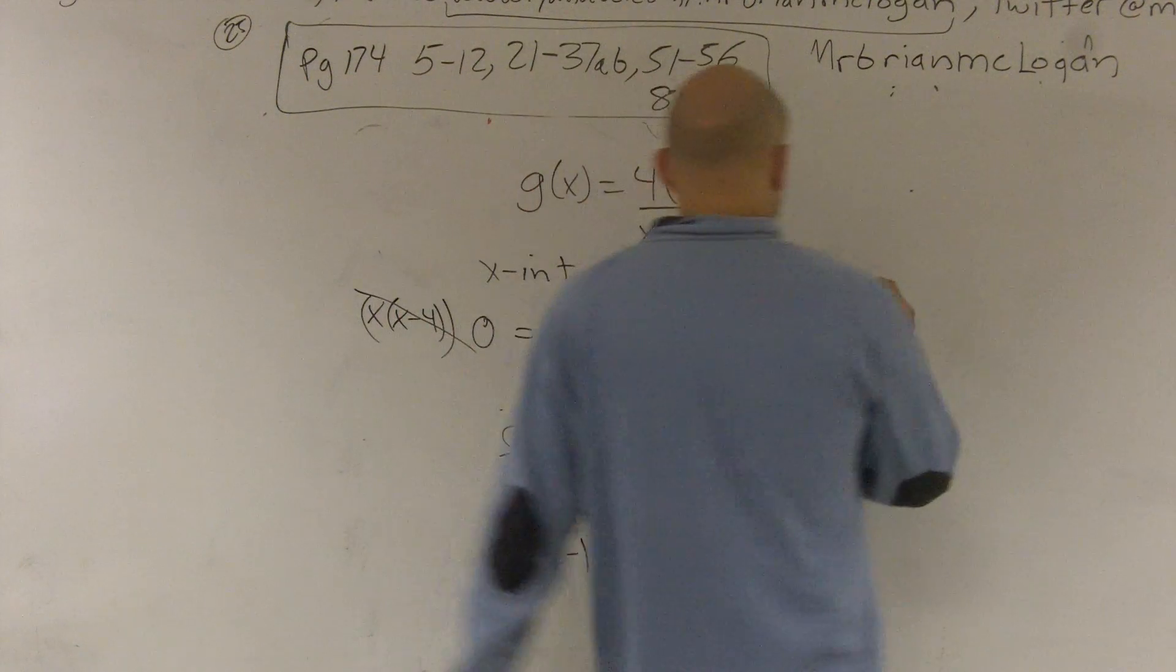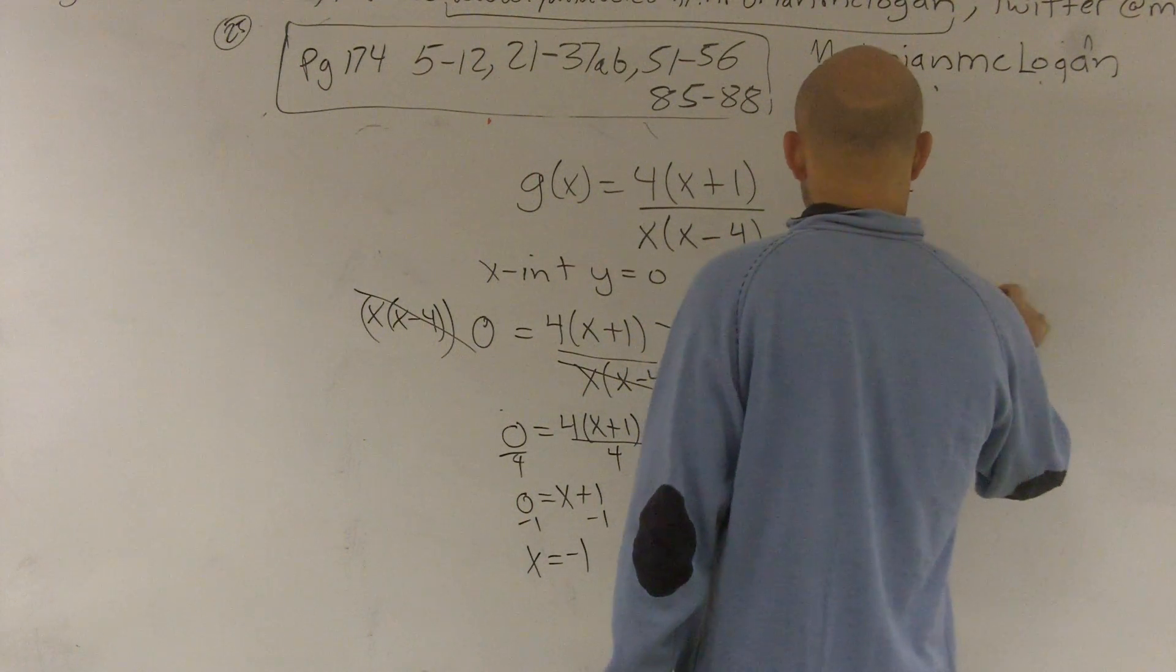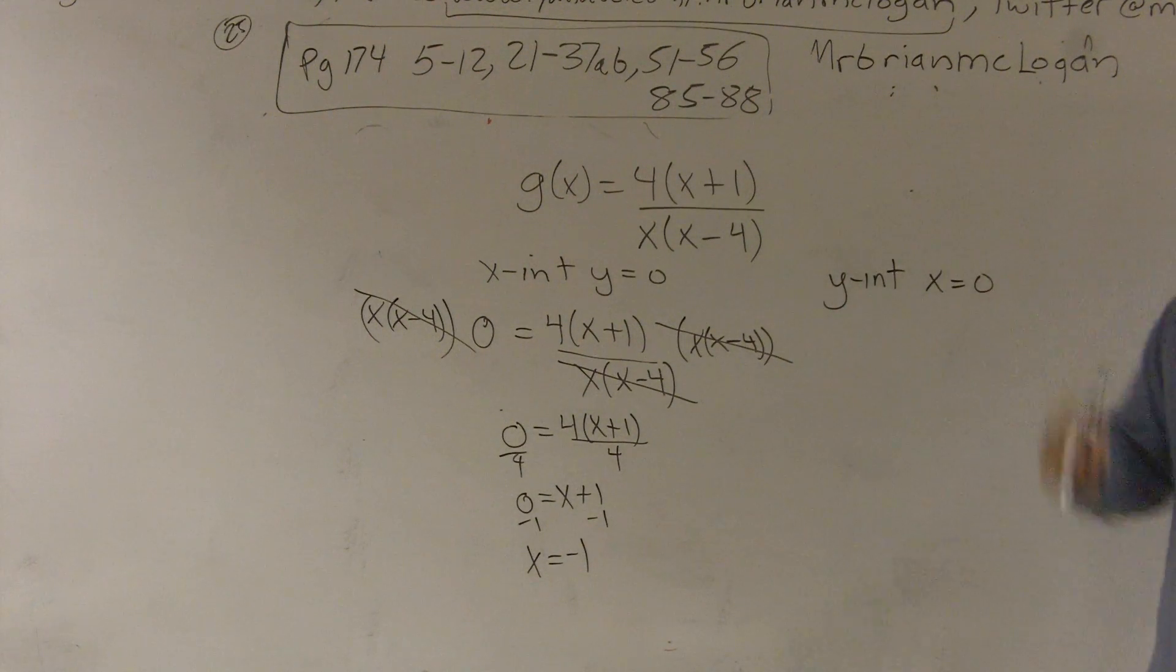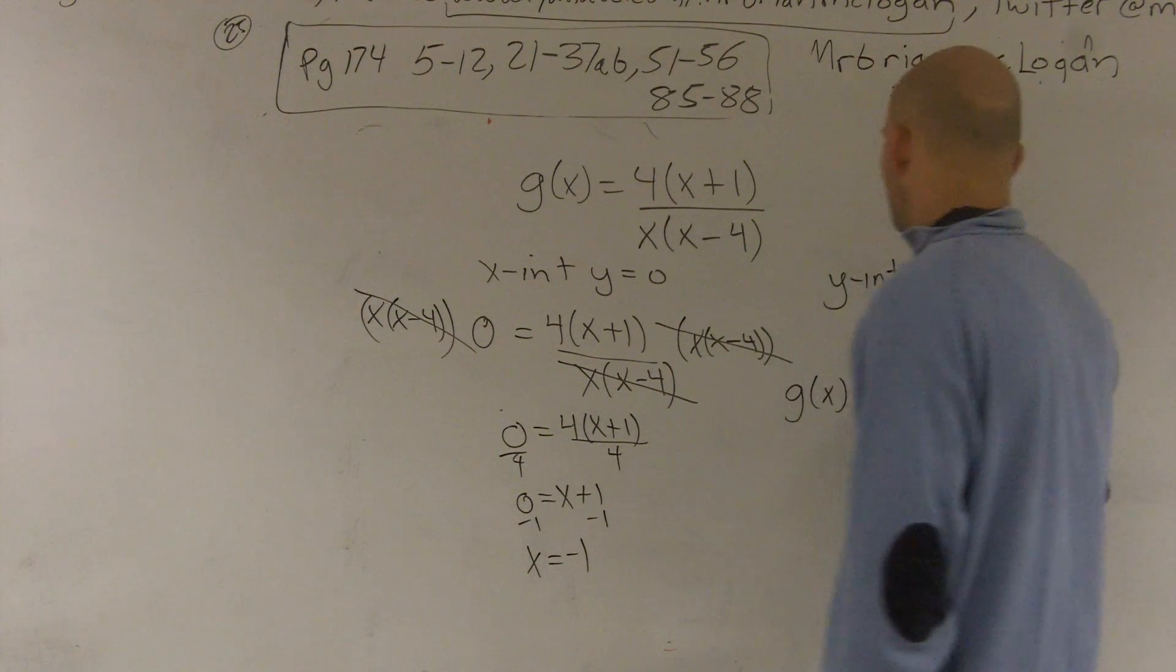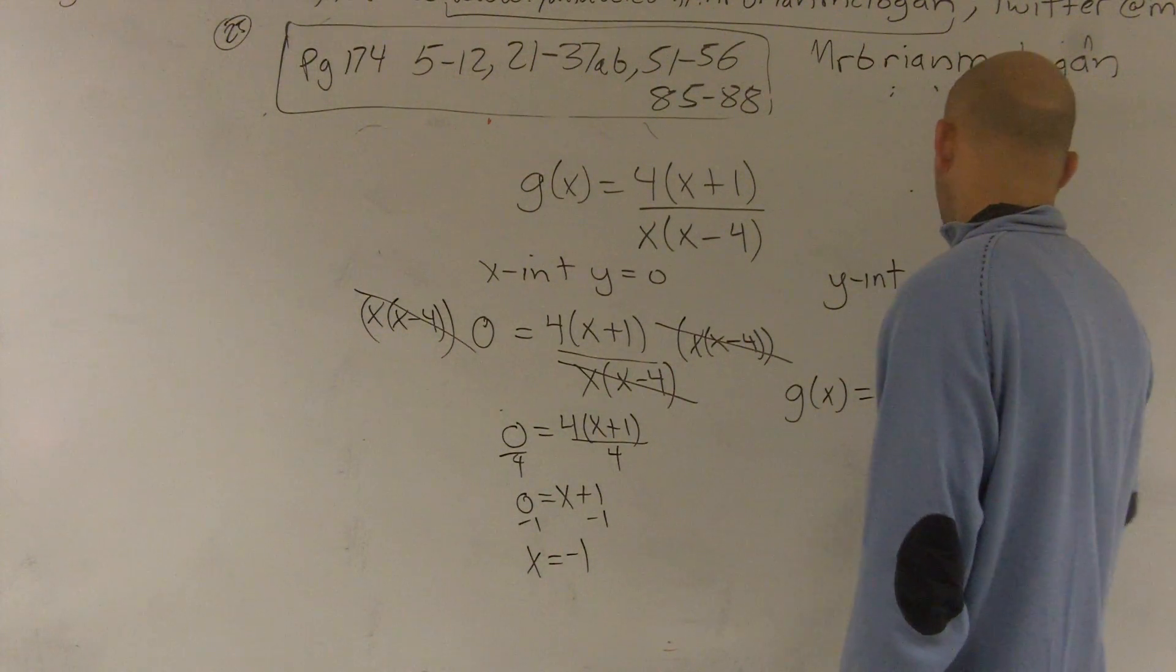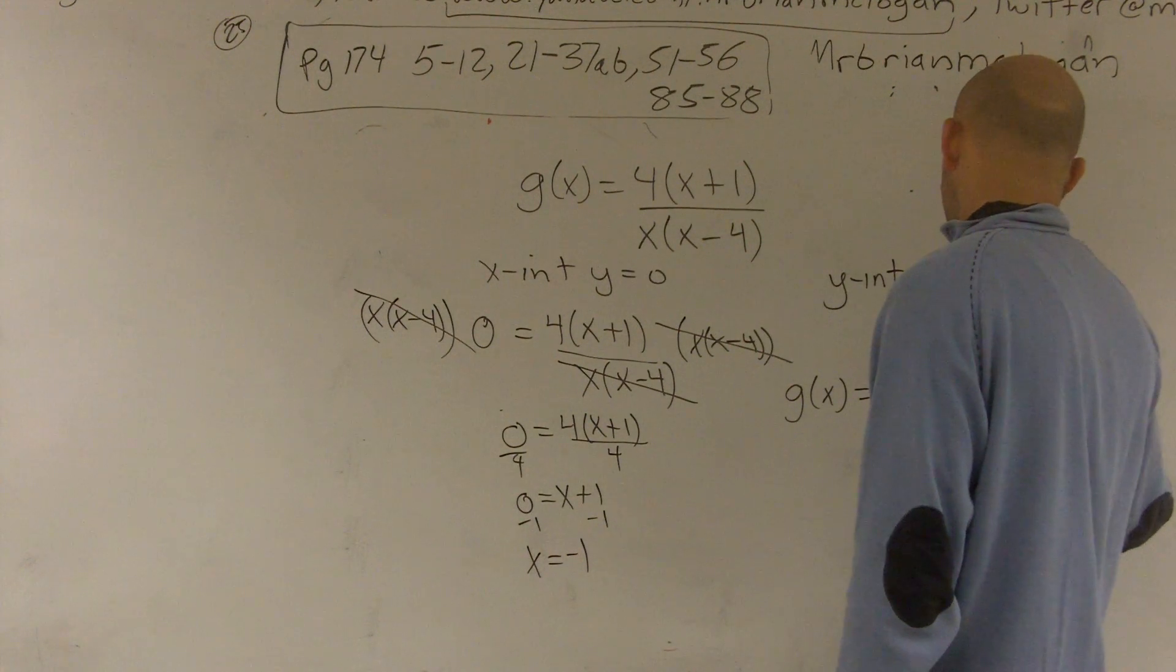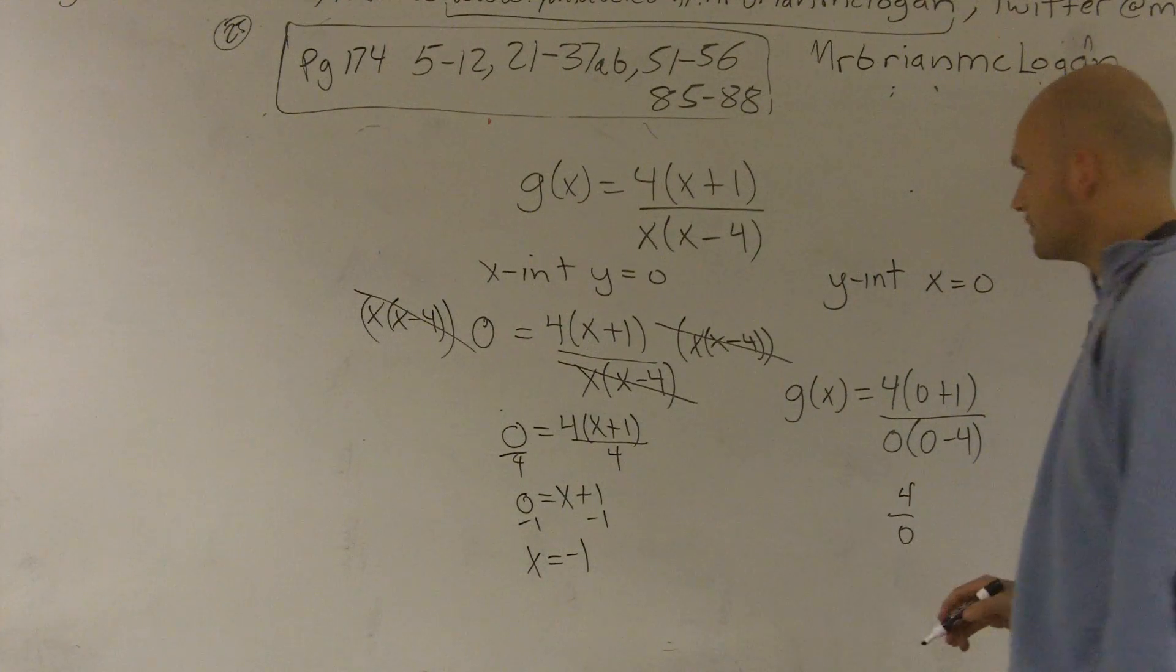Now, to find the y-intercept, x equals 0. So then you just plug a 0 in for all the x's. So I'd say my g of x function equals 4 times 0 plus 1 all over 0 times 0 minus 4. And what we'll notice here is we're going to get 0 on the bottom. We're going to get 4 over 0.